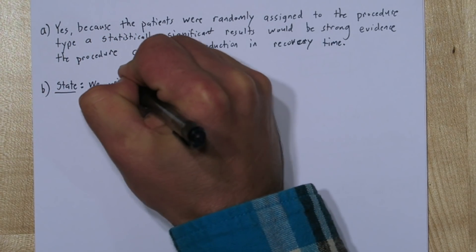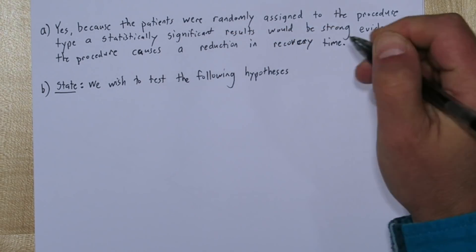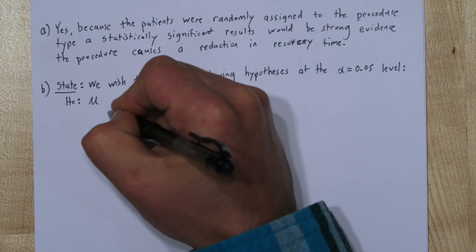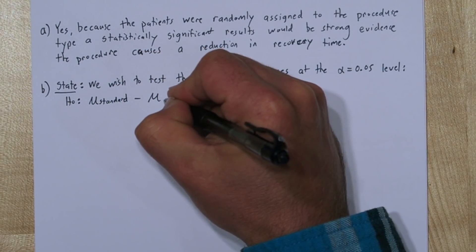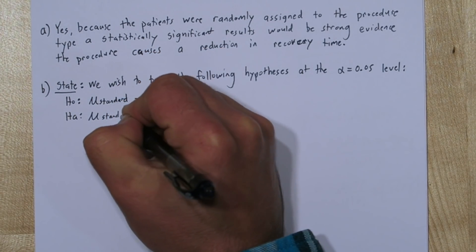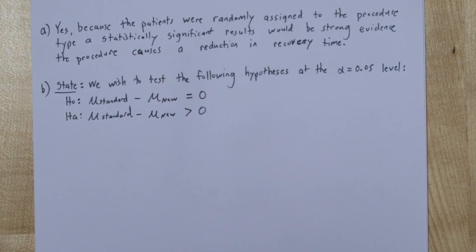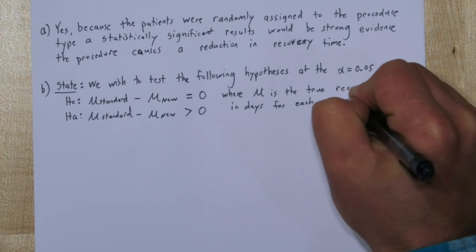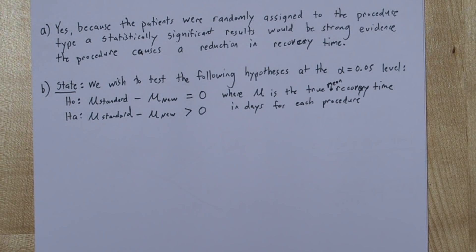For Part B I'm going to do the four-step process. So let's start with state. We wish to test the following hypotheses at the alpha equals 0.05 level. Our null is going to be mu substandard minus mu subnu equals zero. In other words, there's no difference between the true mean recovery time for the two procedures.